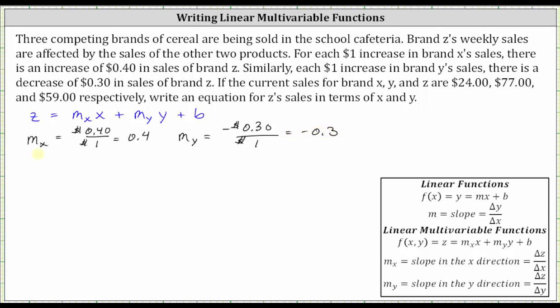Now for our equation, we know that Z must equal m sub x times x is 0.4x, and then plus m sub y times y is plus negative 0.3 times y, or just minus 0.3y plus b. We still need to find the constant b.